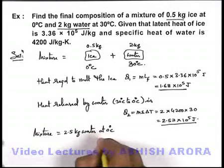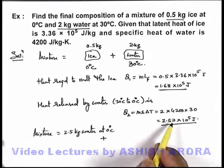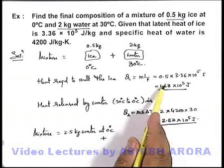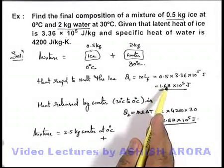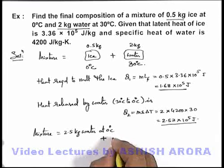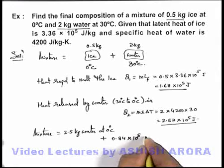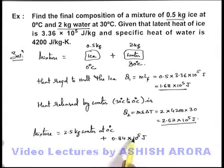At 0°C plus some amount of heat will be left over, which is 2.52 minus 1.68, so that'll be 0.84 × 10^5 joules. This much amount of heat is available here.